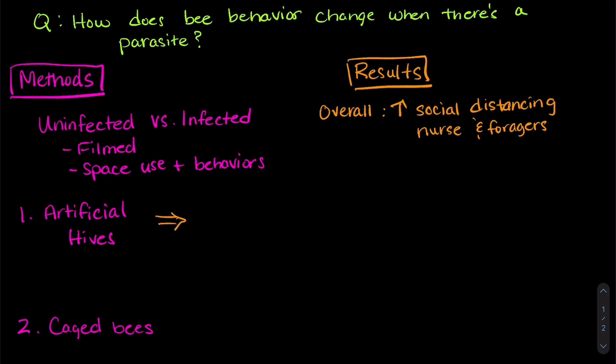For the artificial hive experiment, they saw a couple of things. The biggest was a change in forager behavior. So I'm going to show this in a graph because it's really easy to see the change. So here on the y-axis are the number of forager dances and on the x-axis we have uninfected and infected.